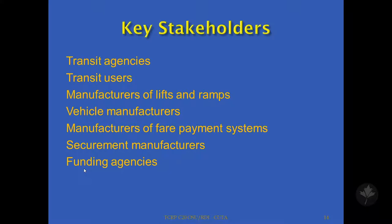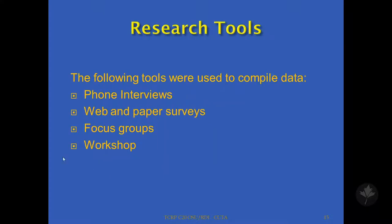This is the list of key stakeholders who were involved in the project: transit agencies, transit users, manufacturers of lifts and ramps, vehicle manufacturers, manufacturers of fare payment systems, securement manufacturers, and funding agencies. The research tools we used to compile the data were phone interviews, web and paper surveys, focus groups and workshops.